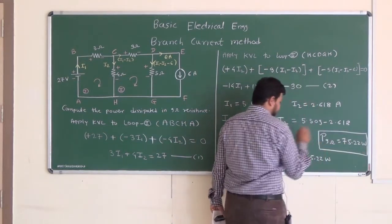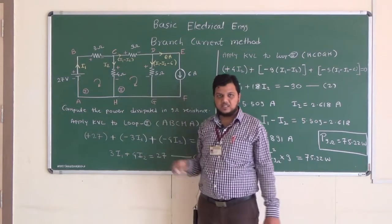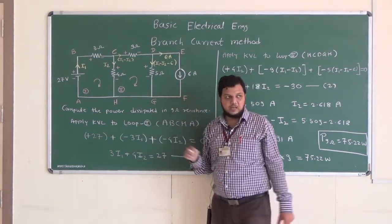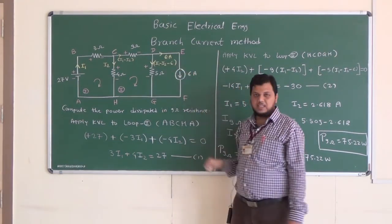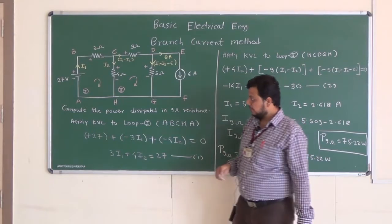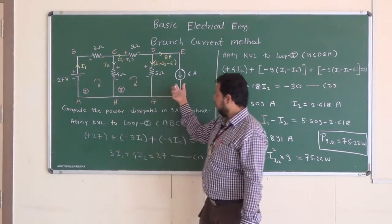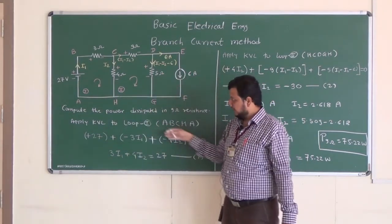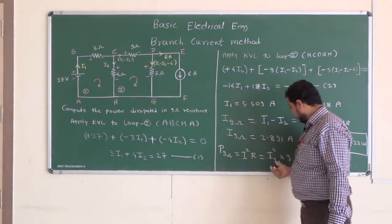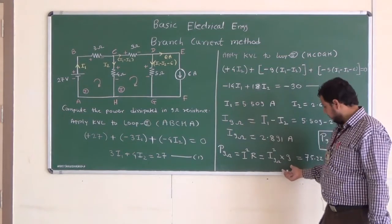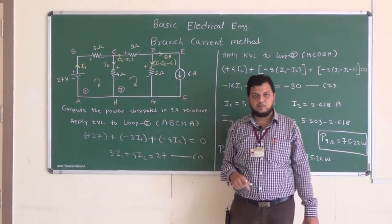That is the final answer. In this problem we calculated power taken by a resistance in a circuit containing both a voltage source and a current source. Whenever there is a current source, its current value is directly known and we apply KCL accordingly. When applying KVL, we choose loops that do not contain the current source. Once we obtain the current, squaring it and multiplying by the resistance gives the power dissipated.